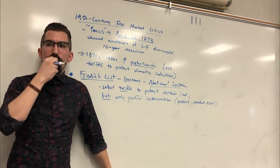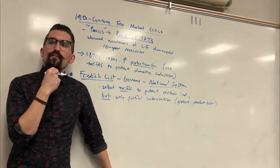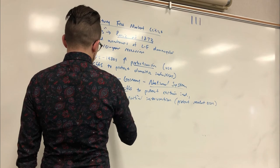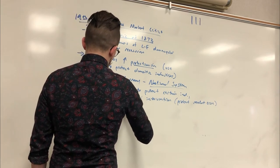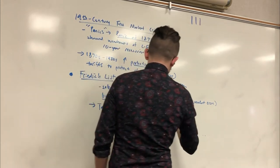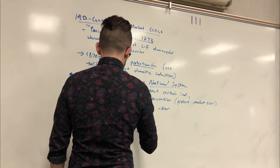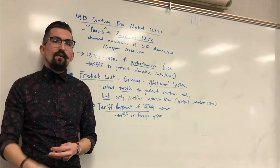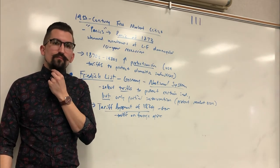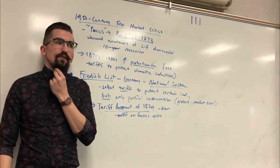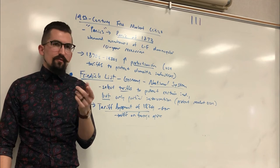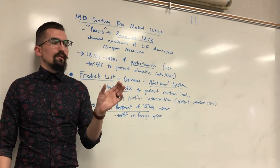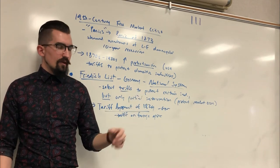Germany is the first to re-initiate tariffs. Bismarck implements the Tariff Agreement of 1879, taxing foreign grains to protect the Prussian grain market. Russian and US grain was too competitive — especially Russian, being geographically close — so tariffs made people more likely to buy German grains.